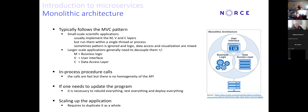A characteristic of monolithic architecture is that it's usually run within one single process, which makes these applications fast because data access is straightforward. If one needs to update the code, it's necessary to rebuild everything because all components are integrated together. When scaling up to reach a wider user base, this requires duplicating the entire application — installing it on different laptops or workstations — so you need to ask users to download and install it.